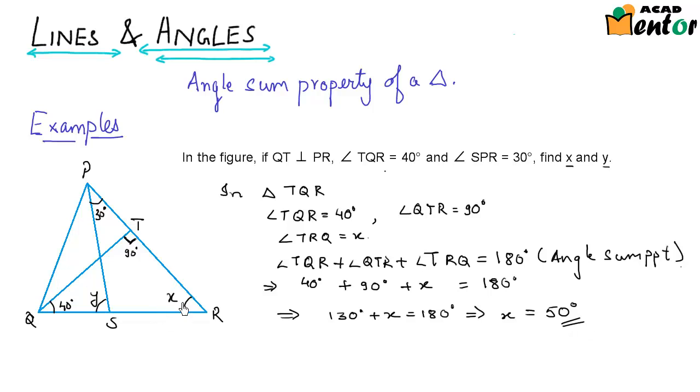On solving this equation, we get 130 degrees plus x equals 180 degrees, so the value of x is 50 degrees. So x is now 50 degrees. How do we go about finding the value of y?